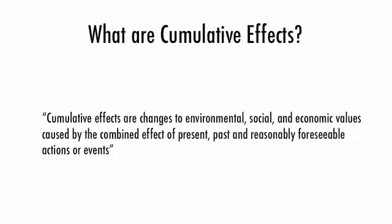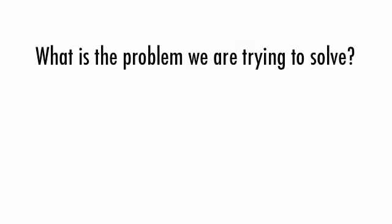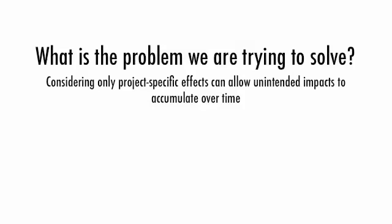So how do we operationalize this kind of definition into something that's actually going to work? The key is to really focus in on the problem we're trying to solve. It really comes down to this: if you're considering only project-specific effects, you can have the accumulation of unintended impacts over time. Each project might produce a very small impact, but if you issue a whole bunch of those permits and have a whole bunch of projects going on, those tiny impacts can accumulate over time and produce situations that you don't want. It's an insidious problem, and it's really at the root of the cumulative effects issue.